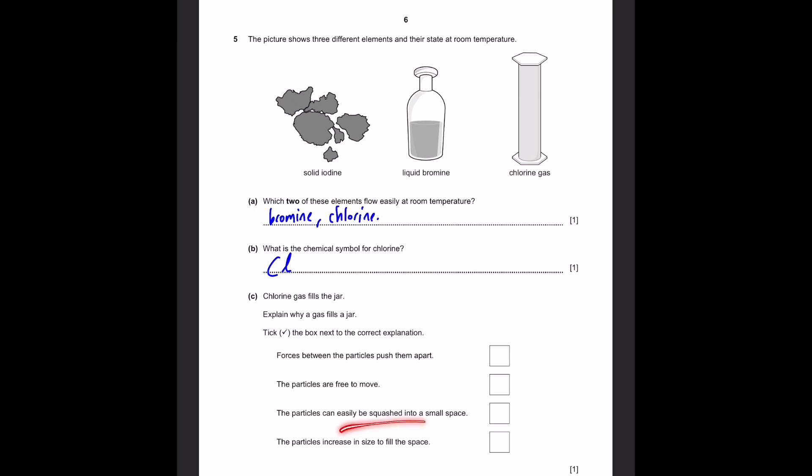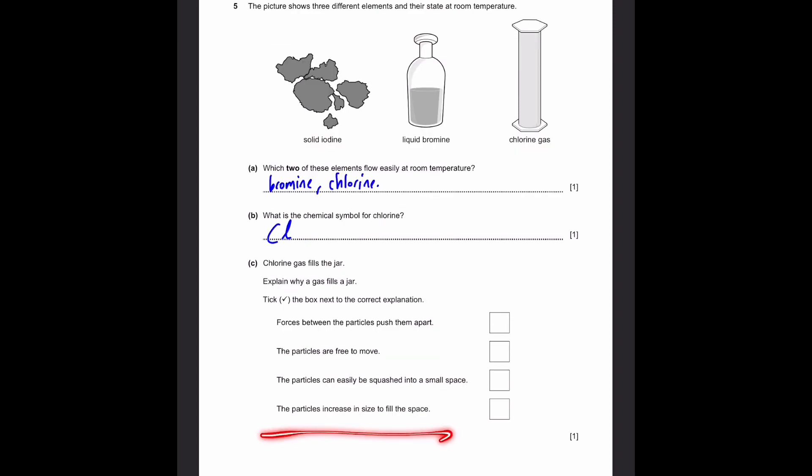The particles can easily be squashed into a small space - Really, that's not a property of gases at all. The particles increase in size to fill the space - Even in solids, or liquids, or gases, whatever state, even if you consider the other three states like plasma, none of these can increase in size for the particles as long as they are the same atom or the same element. So this is obviously wrong. So we got the first, third, and fourth wrong. The second one is correct.